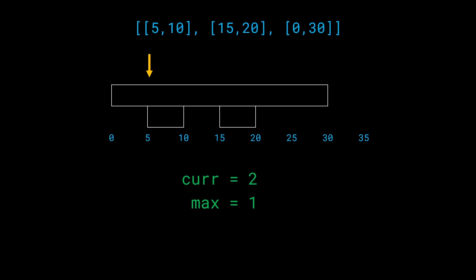`max` reflects the change and becomes 2 as well. From time 5 through 9, two meetings run simultaneously, so `curr` remains 2 and `max` remains 2. But as soon as we hit time equals 10, `curr` decreases back to 1 because the meeting from 5 to 10 has ended. The meeting from 0 to 30 is still going on, so we still need one room. From time 10 to 14, only one room is needed, but at time 15, `curr` becomes 2 again to accommodate both simultaneous meetings. When we move to time 20, `curr` decreases to 1 again.